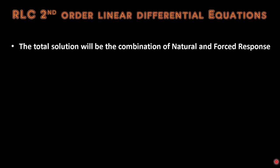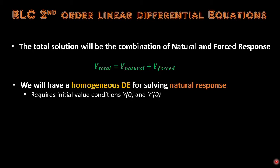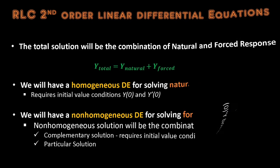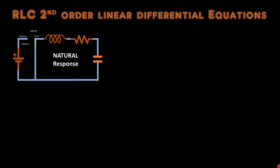Before we go on to obtaining mathematical equations for the RLC second-order linear differential equations: first, the total solution will be a combination of natural and forced response. We will have a homogeneous differential equation for solving the natural response, and it requires initial value conditions y(0) and y'(0). We will have a non-homogeneous differential equation for solving the forced response, and for a non-homogeneous solution it is a combination of the complementary solution — which also requires initial value conditions y(0) and y'(0) — and a particular solution.